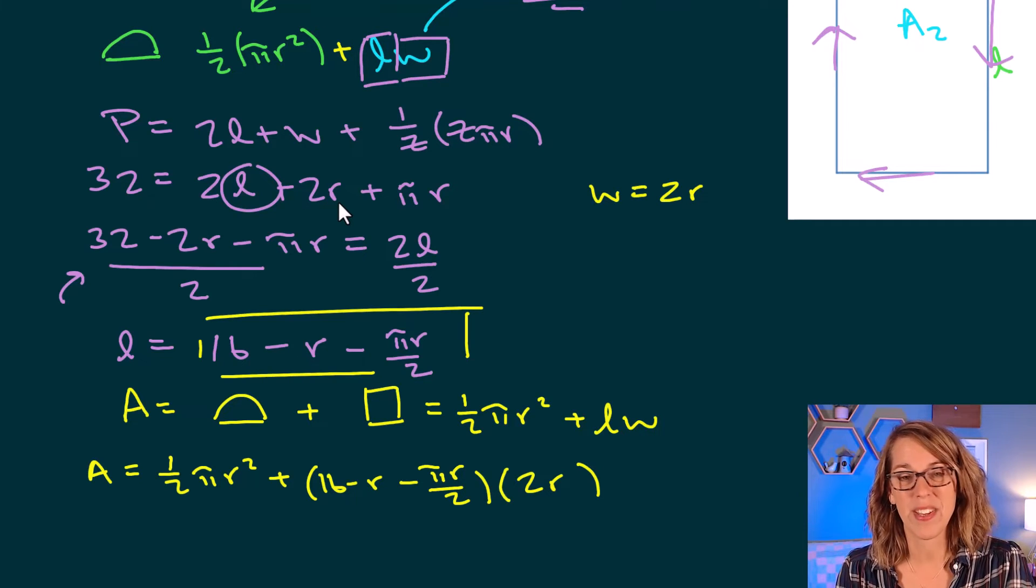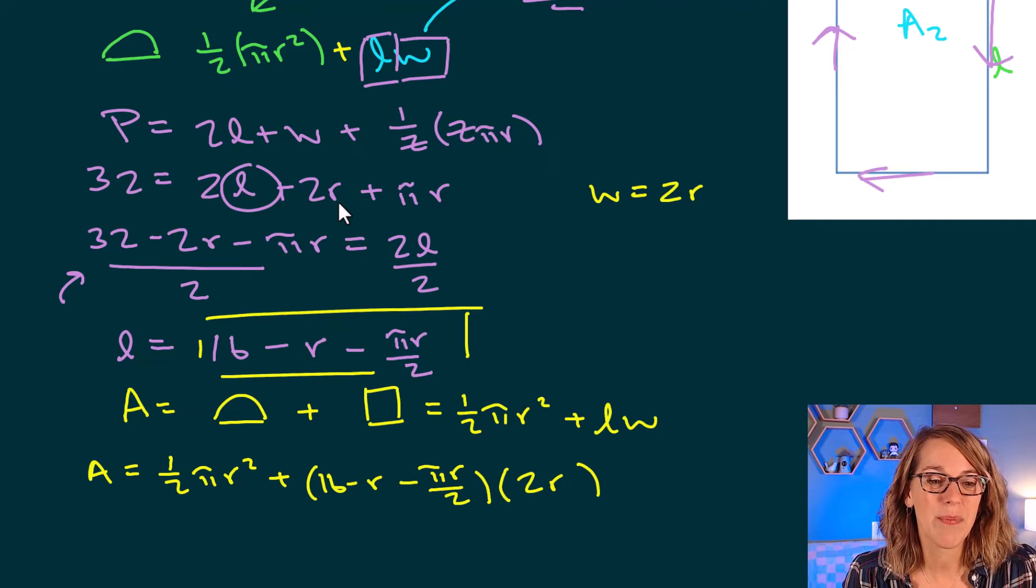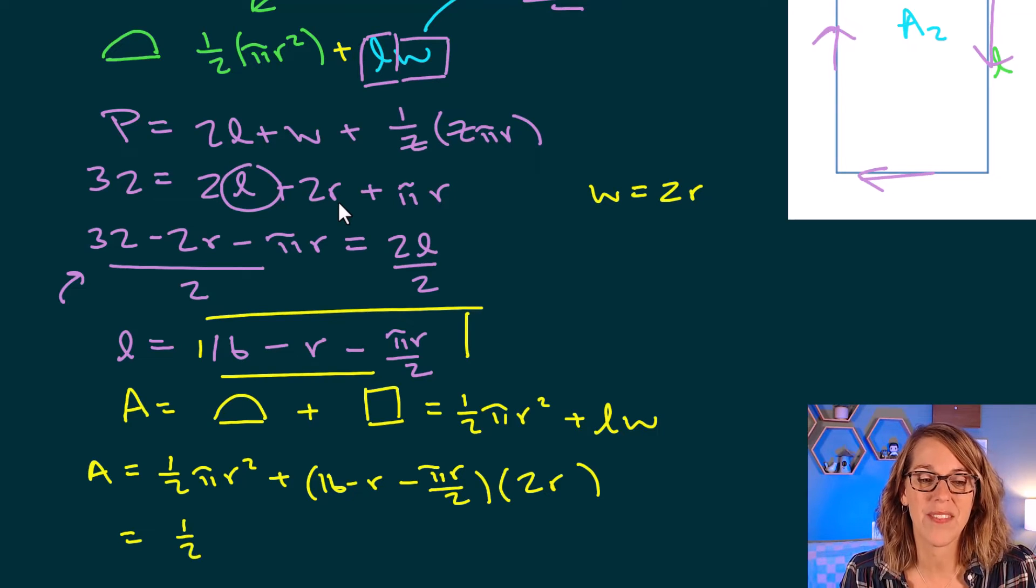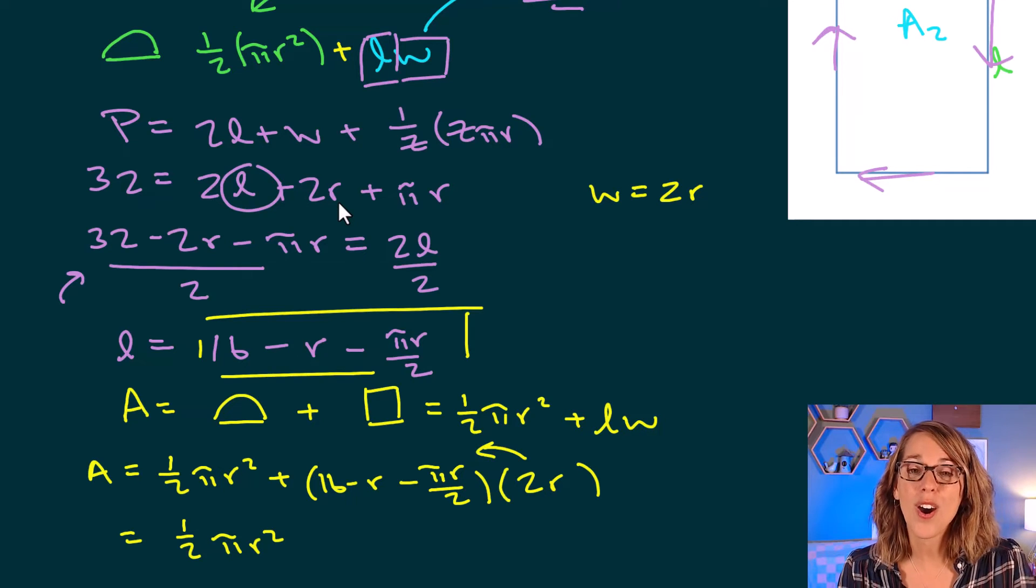I'm going to clean it up a little bit and then take the derivative, set it equal to 0. So doing a little bit of cleanup, I've got a 1 half, still that 1 half pi r squared. I'm going to distribute my 2r through to all three of my terms. So 2r times the 16 is going to be plus 32r.